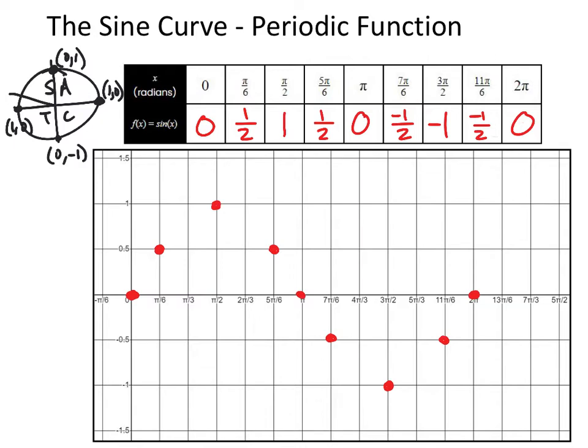This is called a sine wave. It is one period of a sine wave, because after this the wave would start repeating itself. This section right here is called a period.